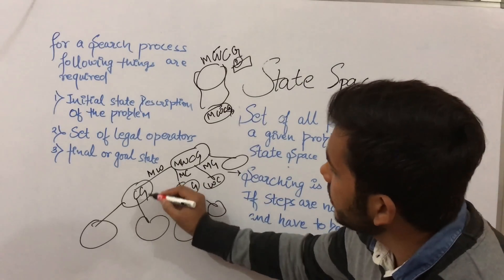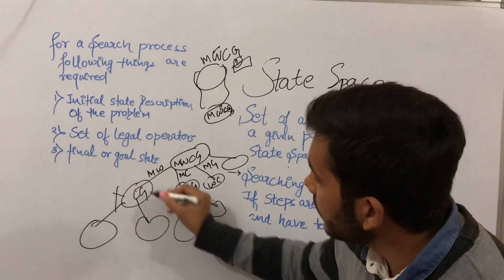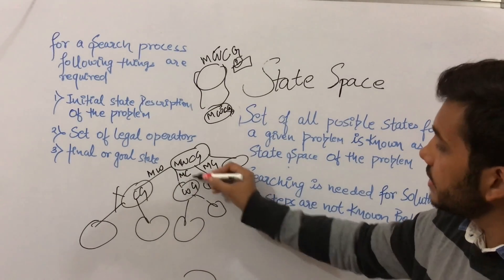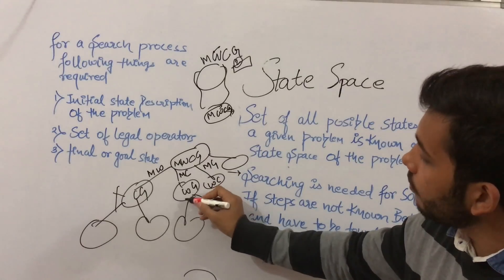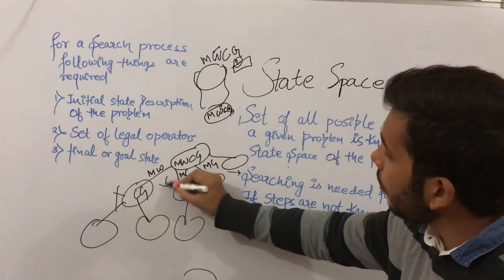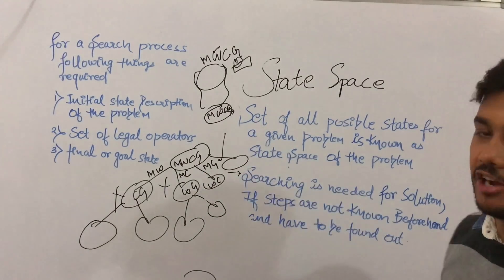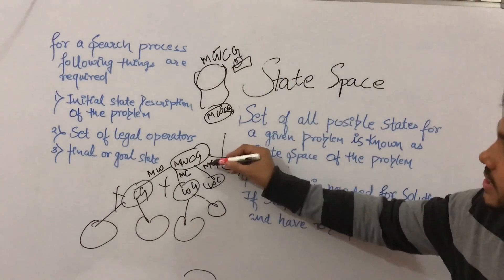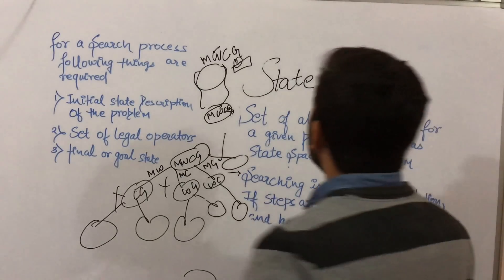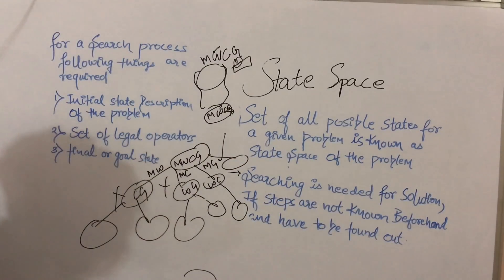As you can see, there are four possible states, but some states will not give you the final result or goal state. For instance, if wolf and goat are left behind, then wolf will eat the goat. So only valid moves are followed. State space can be defined as the set of all possible states for a given problem.